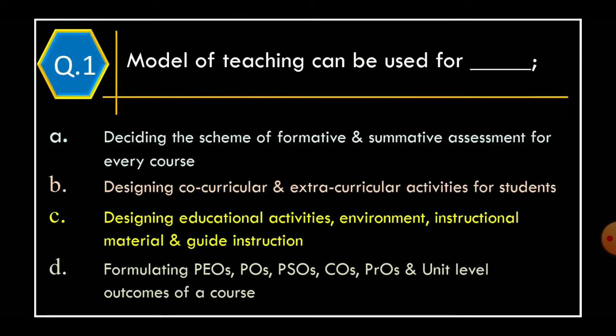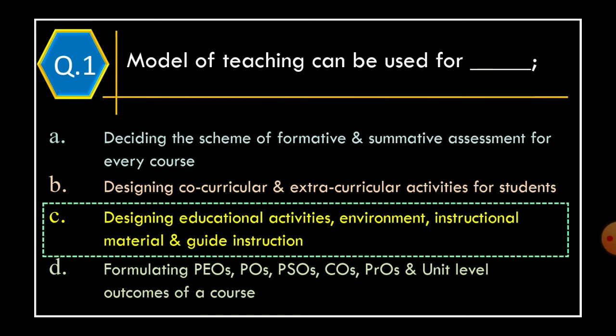Model of Teaching can be used for: Option A – Deciding the scheme of formative and summative assessment for every course. Option B – Designing co-curricular and extracurricular activities for students. Option C – Designing educational activities, environment, instructional material and guide instruction. Option D – Formulating PEOs, POs, PSOs, COs, PROs and unit level outcomes of a course. The correct option is Option C: Designing educational activities, environment, instructional material and guide instruction.